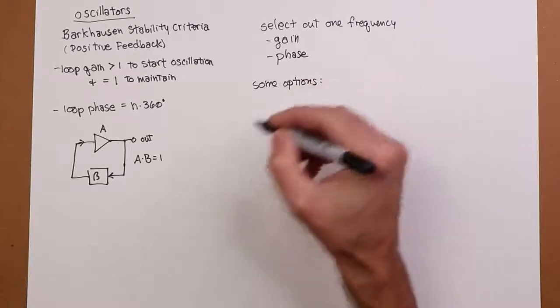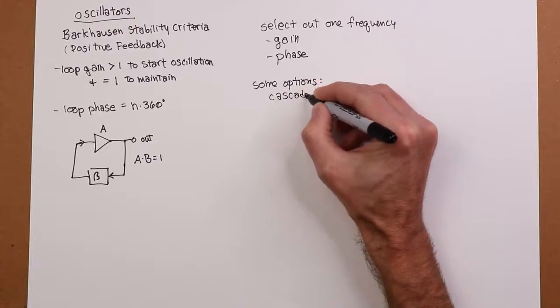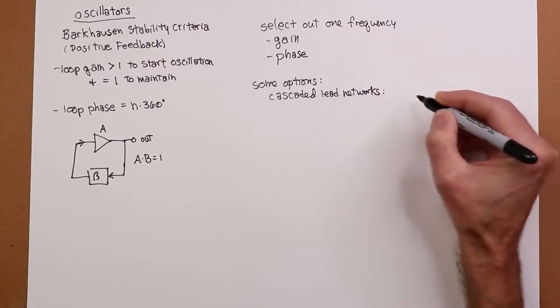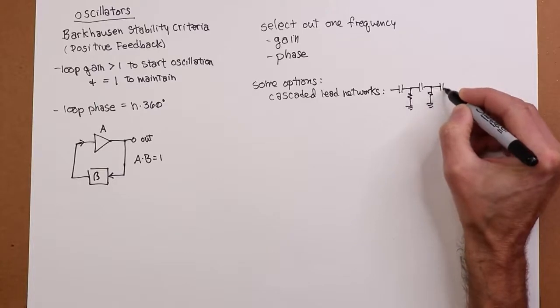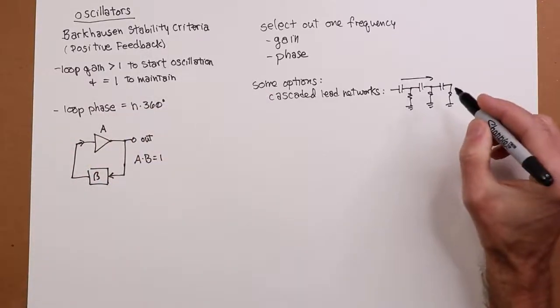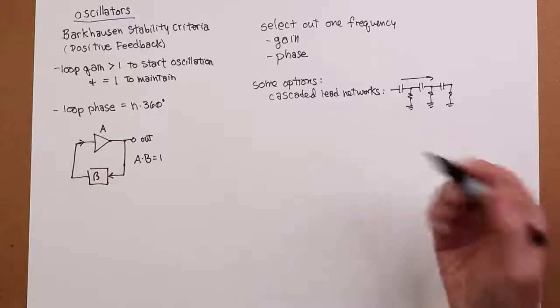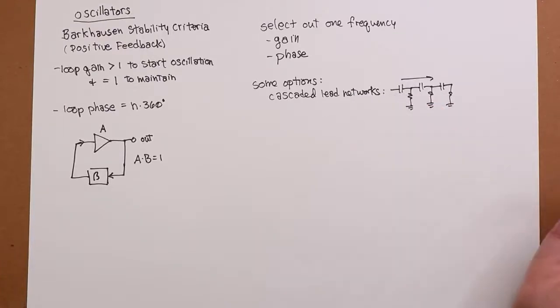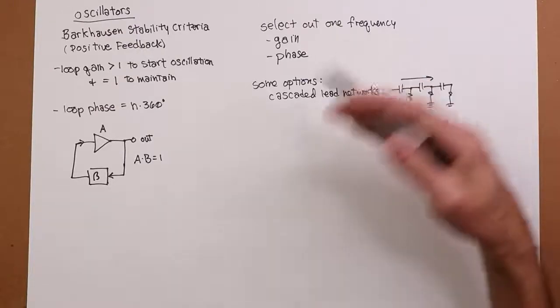So, some options. You could set up a bunch of lead networks, cascaded lead networks. So you have something that looks like this. Caps would work better than inductors. So the signal's going through like this. If you had an amplifier over here that was an inverting amplifier, you'd get 180 degrees out of that. So you'd need another 180 to get your N360. One lead network is going to get you 90 max. Trying to pull the 180 out of the two of them, that's right at the theoretical limit. So that's not practical.